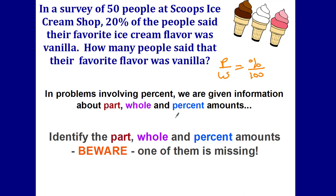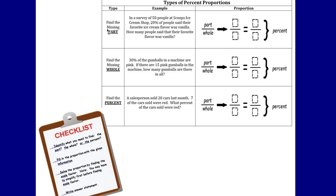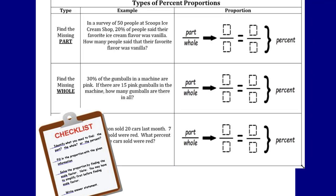Let's take a look at this problem. In a survey of 50 people at Scoop's ice cream shop, 20% of the people said their favorite ice cream flavor was vanilla. How many people said that their favorite flavor was vanilla? When you are trying to solve for the missing amount, you need to identify the part, the whole, and the percent — what you're given in your word problem. But beware, one of them will be missing. In the percent problems we've been doing, the part has been missing and that's what we've been solving for. But sometimes the whole or the percent may be missing — that's what you have to be able to identify.